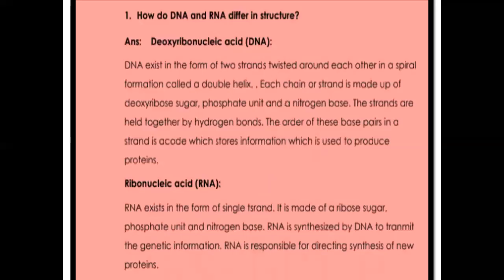Question number one: how do DNA and RNA differ in structure? DNA stands for deoxyribonucleic acid. DNA exists in the form of two strands twisted around each other in a spiral form called a double helix. So DNA is made up of two strands, and those two strands twist around each other to form a spiral structure called the double helix.